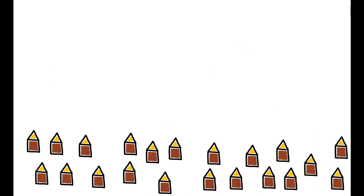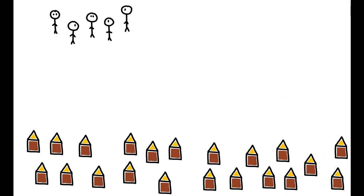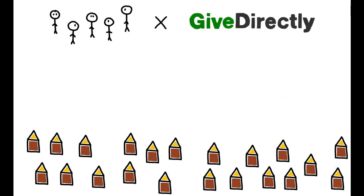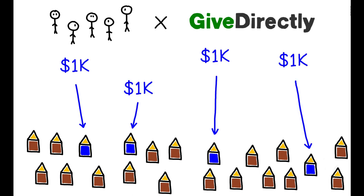Between 2014 and 2017, the authors worked with the NGO GiveDirectly and provided one-time cash transfers of approximately $1,000 US dollars to over 10,500 poor households in rural Kenya.